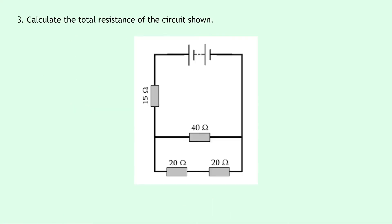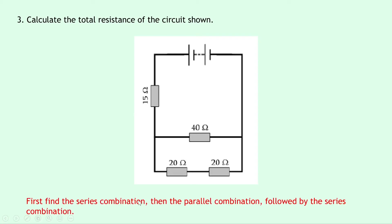Question 3 says to calculate the total resistance of the circuit shown, and this one looks a bit trickier than what we've done so far. We've got two 20 ohm resistors in series, and that is in parallel with a 40 ohm resistor, and then we've got a 15 ohm resistor on its own at the side. The easiest thing to do here would be to first find the series combination, then find the parallel combination of that answer in parallel with the 40 ohm resistor, and then add that total resistance to our 15 ohms in series. So this one's actually got three parts: series, then parallel, then series.